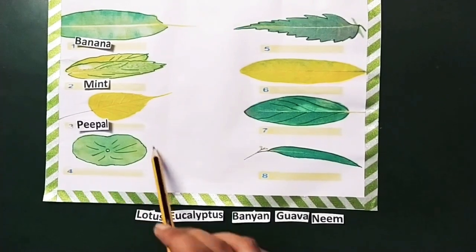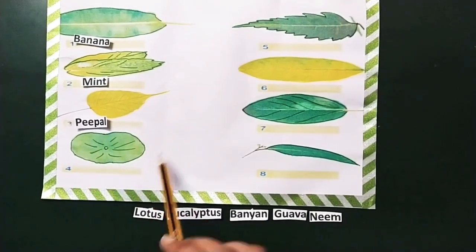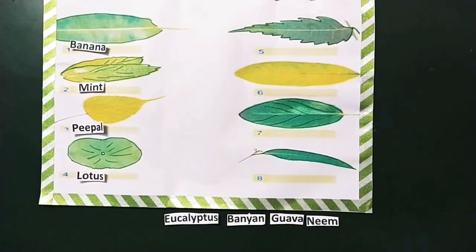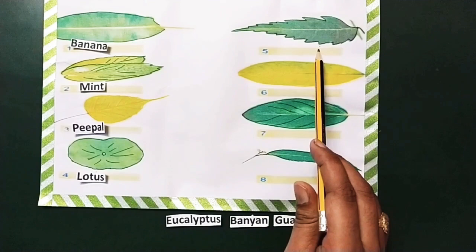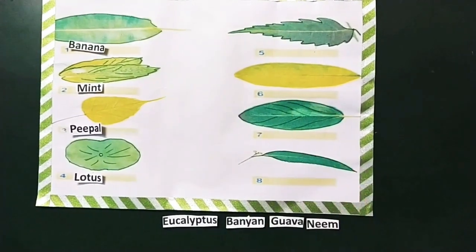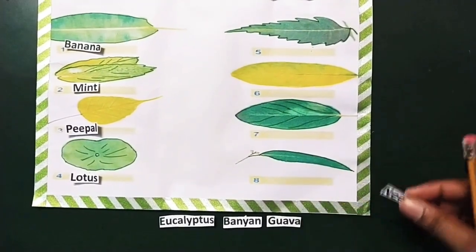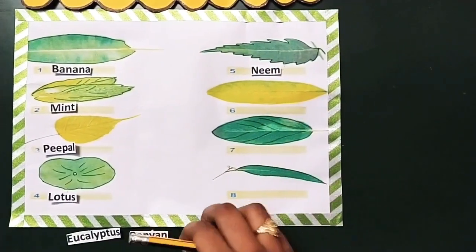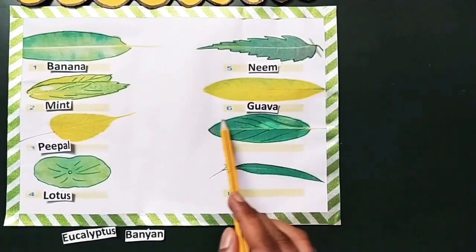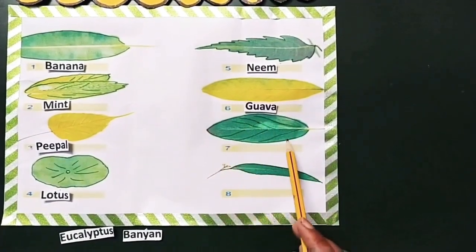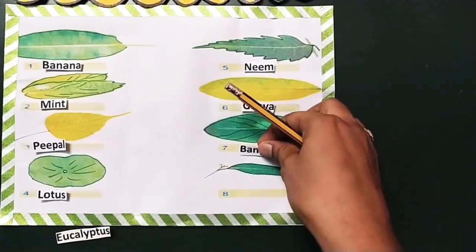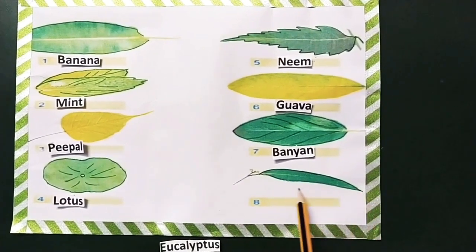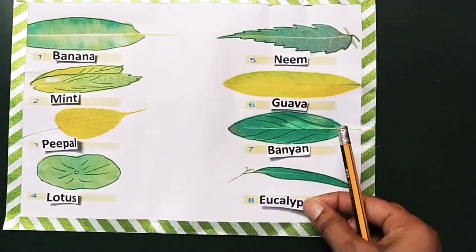Now we have this round-shaped leaf. Which leaf could it be? It is lotus. And now here we have this leaf — it is very common in our surrounding. Yes, it is the neem. Next leaf — it is the guava. Now we have this oval-shaped leaf. Yes, it is the banyan. One option is left, and the leaf is triangular-shaped — it is the eucalyptus.